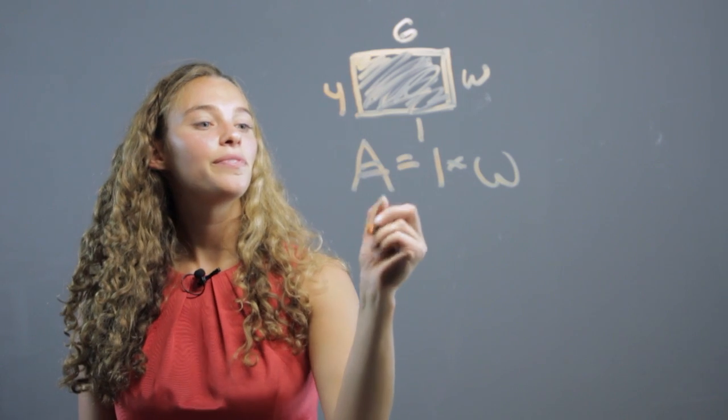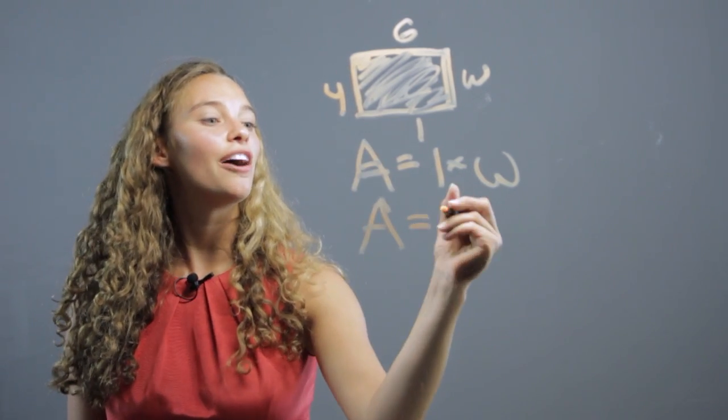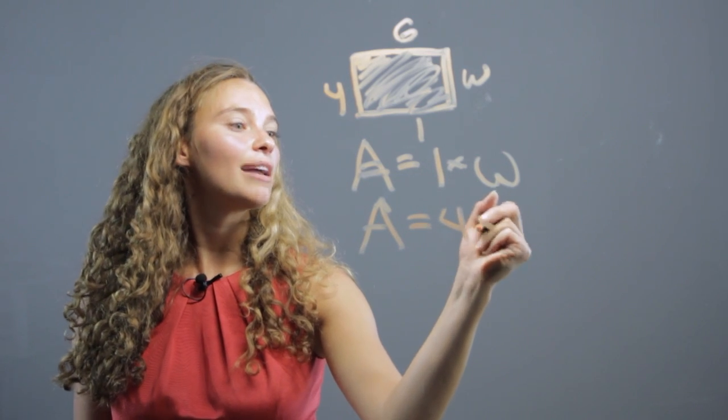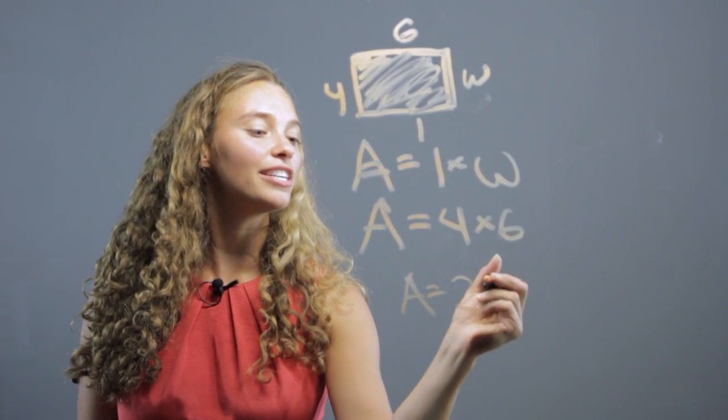We know A equals - always have them write the formula first and then write below - 4 times 6. So they know A equals 24.